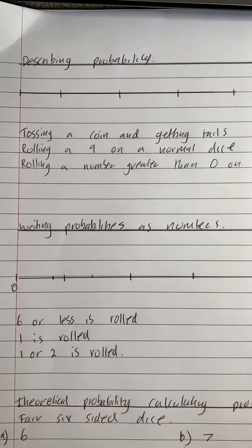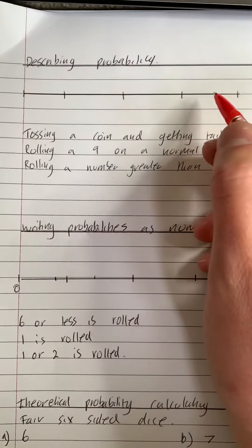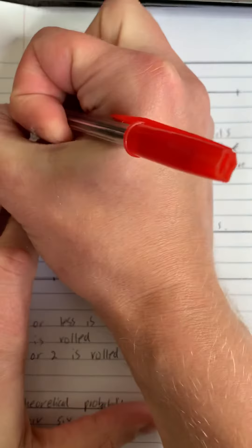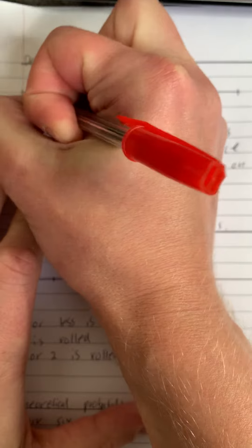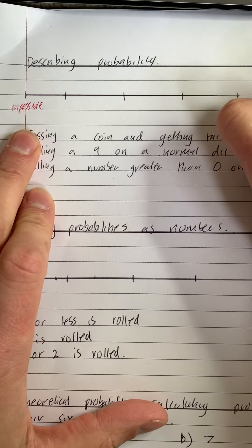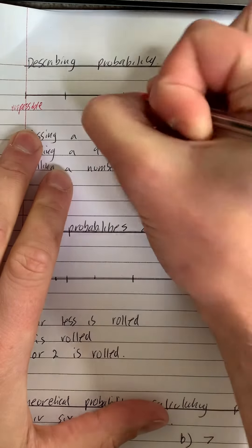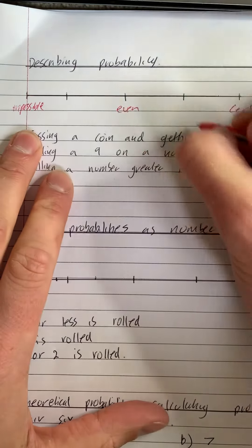Okay, describing probability. Now we have a probability line. This bit here would be impossible. We've then got certain here. In the middle we've got even chance, and we can put likely and unlikely.